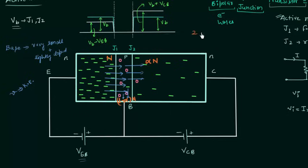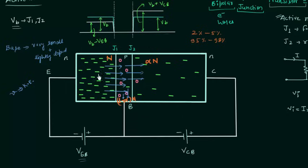Only 2–5% of electrons recombine in the base, and 95–98% of electrons are collected in the collector. Therefore most of the electrons emitted by the emitter move to the collector. This is what happens when you forward bias junction J1 and reverse bias junction J2 in a bipolar junction transistor.